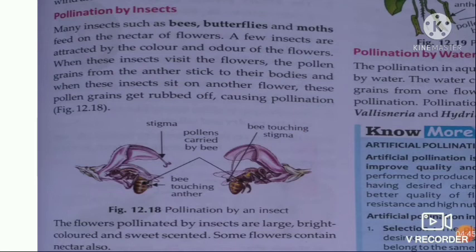As you can see in this picture, here pollination is done by insects such as bees, butterflies, and moths sitting on flowers.